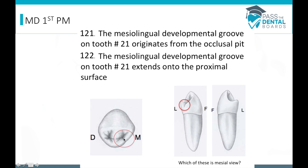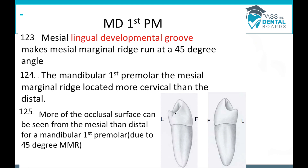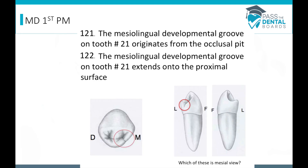This tooth has a mesiolingual developmental groove that originates from the occlusal pit and extends onto the proximal surface. If shown a mesial or distal view image, you should be able to identify the mesial view based on that mesiolingual groove. The groove makes the mesial marginal ridge slope downward at a 45-degree angle, making it lower than the distal marginal ridge. From the mesial view, you can see more of the occlusal surface than from the distal view — this is a really important concept for this tooth.